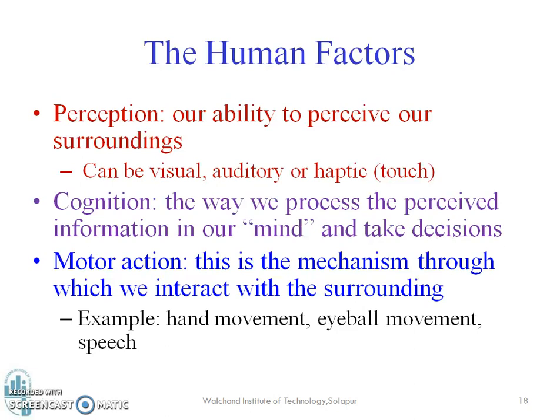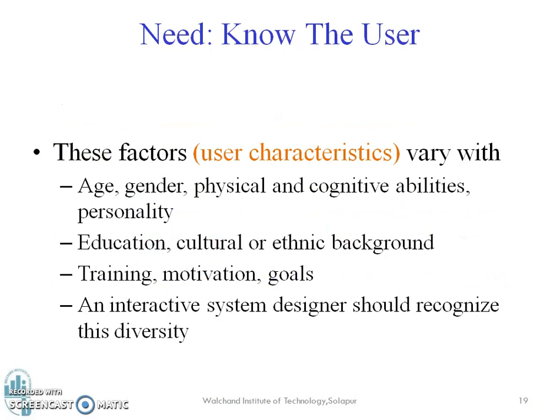Cognition is the way we process the perceived information in our mind and take decisions. Motor action is the mechanism through which we interact with the surrounding — for example, hand movement, eyeball movement, and speech. These will be different for different types of users.